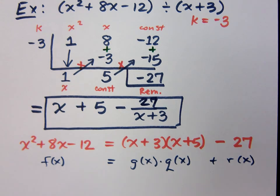So, I maintain that this original function can be broken down. If you were doing division by g(x), this x plus 3, x plus 3 goes in x plus 5 times. But you had a remainder of how much? Negative 27.